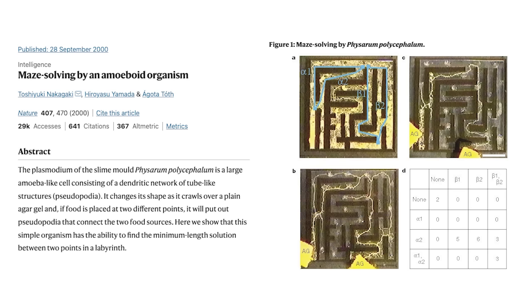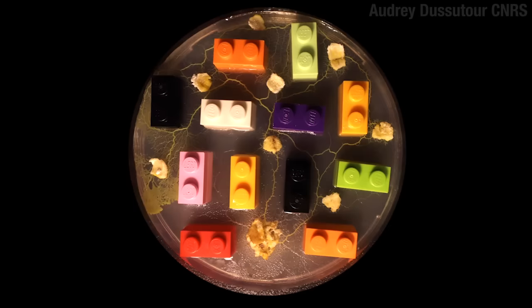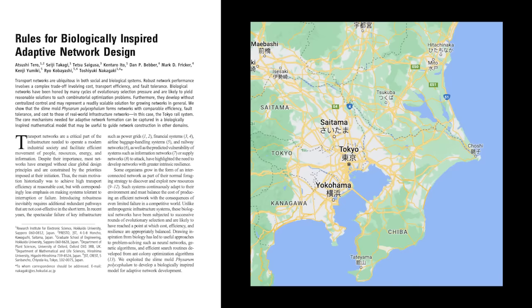Using this strategy, it can solve a maze. But what's amazing is that the solution it settles on tends to be the shortest path through the maze. If you put food down in a bunch of different places, it finds the overall shortest path between all of them. Remember, we're talking about a single cell with no brain.